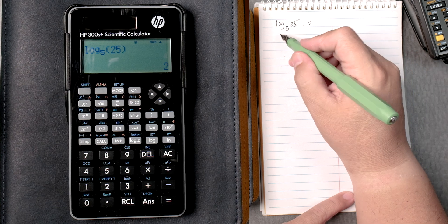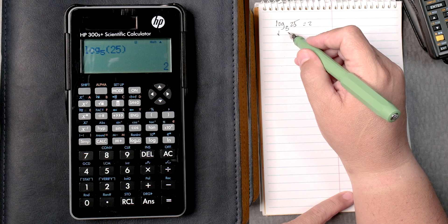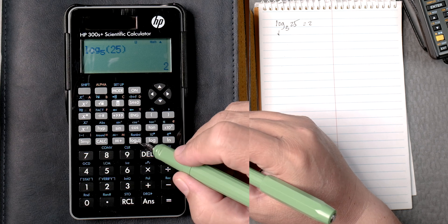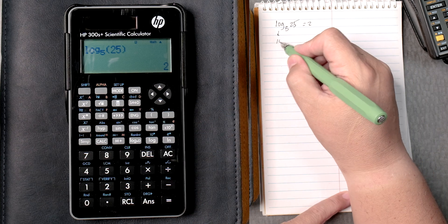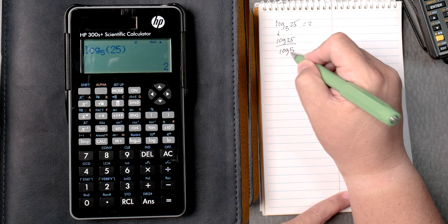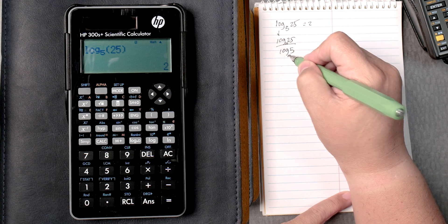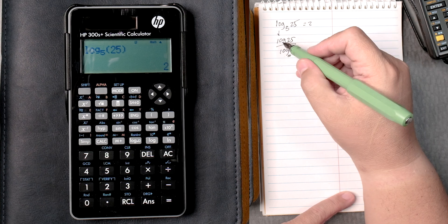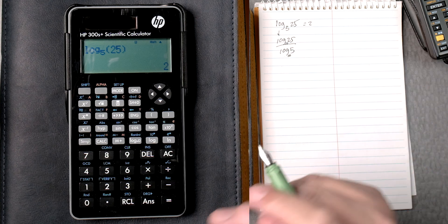How do you do it if you didn't have the different log base? Well, there's a rule that says the log of 25 divided by the log of 5 based on base 10. So log of 25 divided by log of 5 should give you the answer.